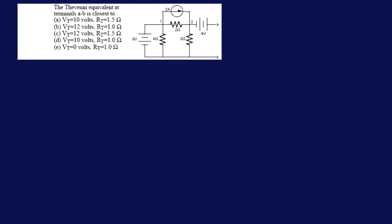The question here is to find the Thevenin equivalent at terminals AB — finding the Thevenin voltage and the Thevenin resistance seen from terminals AB. This is a multiple choice question, so we need to eliminate answers. Between V and R, finding V takes a little longer than finding R, so we're going to find R first and then eliminate answers from there.